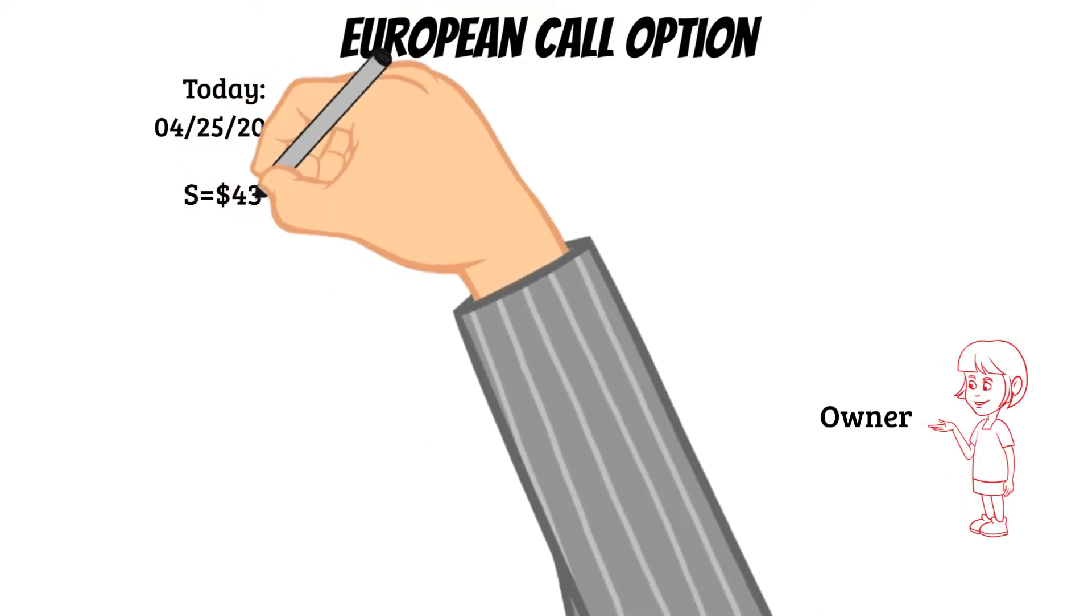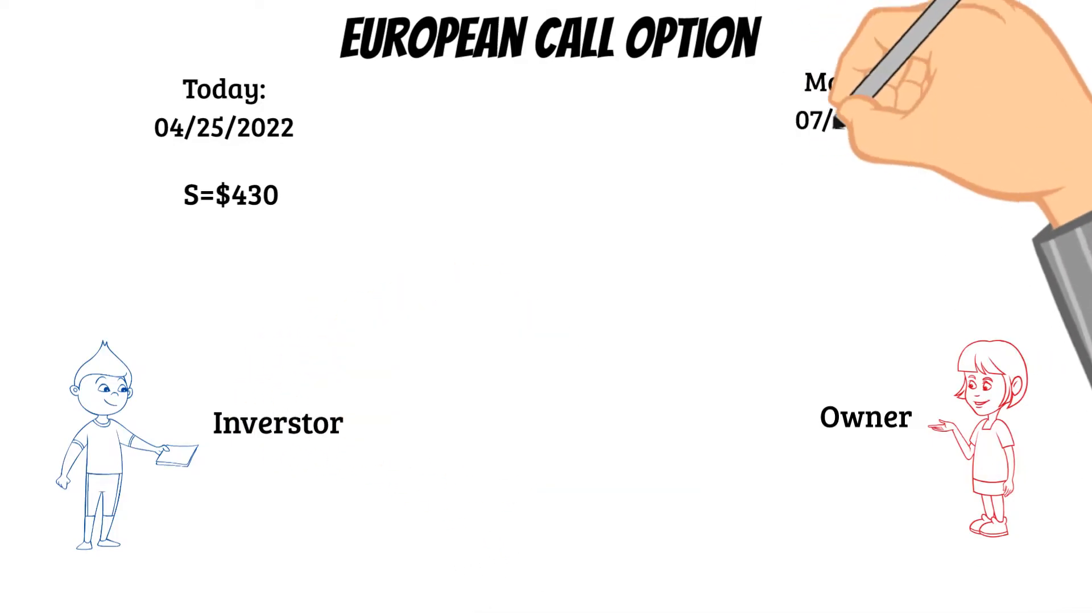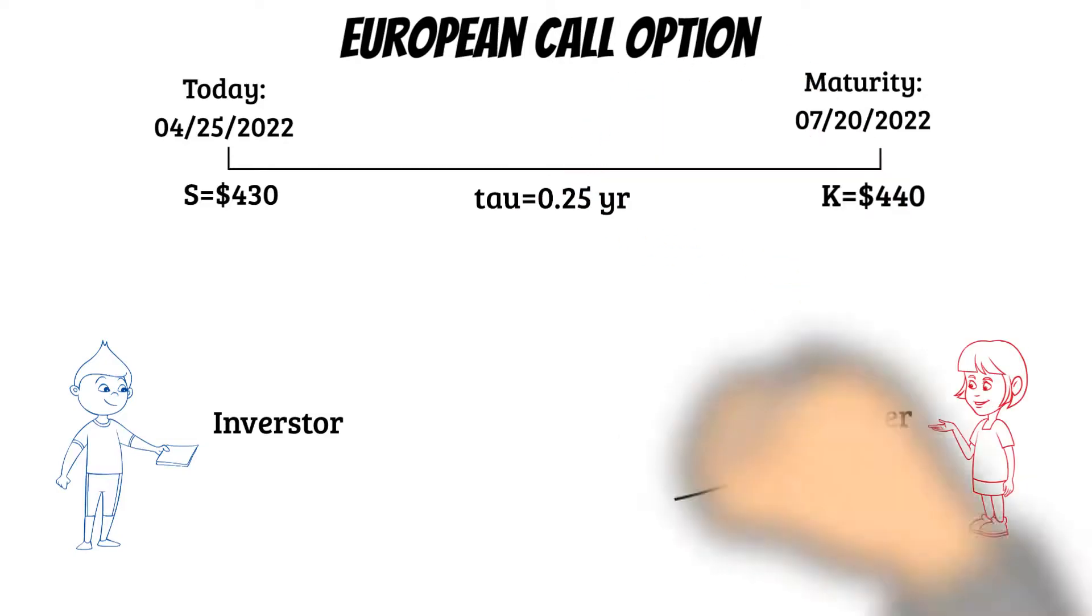Blue wants to buy these stocks from Red three months later at a price of $440, but in order to purchase these stocks in three months, Blue needs to pay Red $6.50 as a deposit.